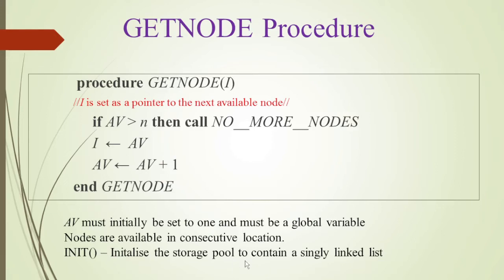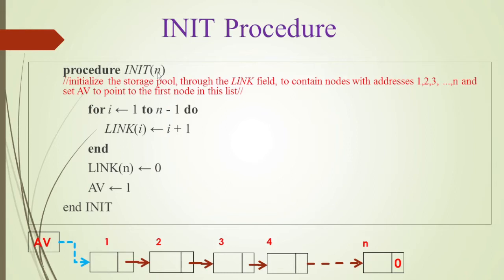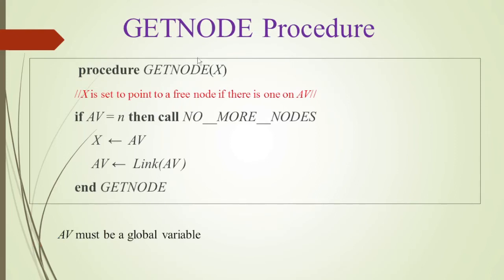In the init procedure, we have n elements and we want n nodes. For i equal to 1 to n minus 1, we store i plus 1 in the link of i — so 2 is stored in link of 1, 3 is stored in link of 2, and so on successively. The nth node's link field is set to 0, and av is set to 1 so that av points to the first node in the storage pool.